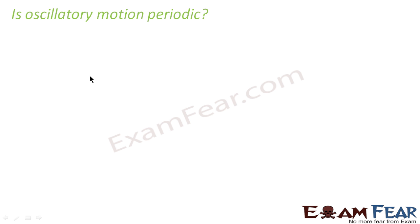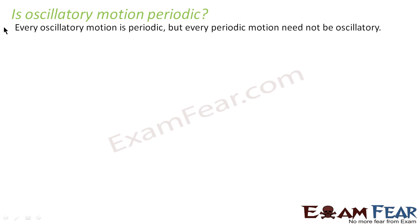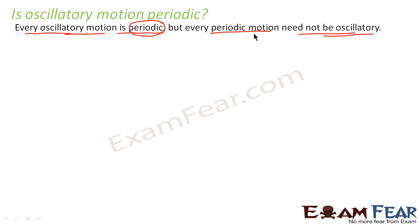Oscillatory motion is a periodic motion. So does that mean all oscillatory motions are periodic, or are all periodic motions oscillatory? Every oscillatory motion is periodic, because periodicity is a necessary condition for a motion to be oscillatory — every oscillatory motion will repeat itself after a fixed interval of time. But every periodic motion need not be oscillatory; some periodic motions are oscillatory but not all of them.